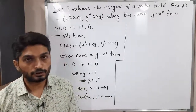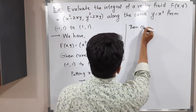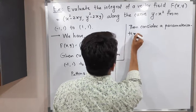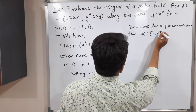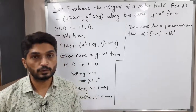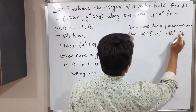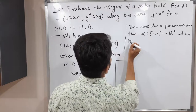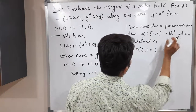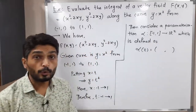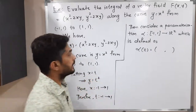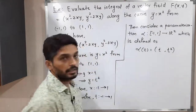Now we can define a parameterization of the given curve. Consider the parameterization α from [−1, 1] to ℝ². Since t varies from −1 to 1, α is defined on the closed interval [−1, 1], with co-domain ℝ², so there will be two components. Since x = t and y = t², we define α(t) = (t, t²).